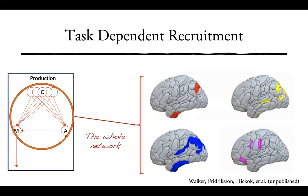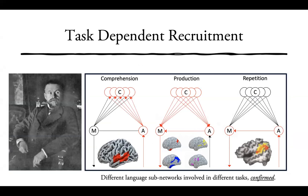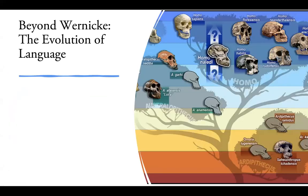Pretty much naming — or speech production generally — involves the entire network. So Wernicke's prediction that different parts of his model would correspond to different brain regions and that engagement would be task-dependent is, according to this work, well supported, if not confirmed. Now I want to turn to beyond Wernicke, using the evolution of language as a tool to think about the problem.